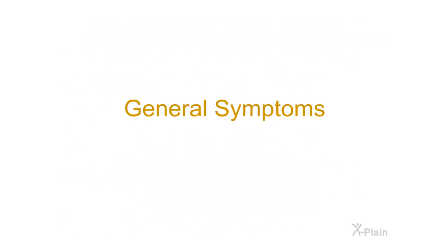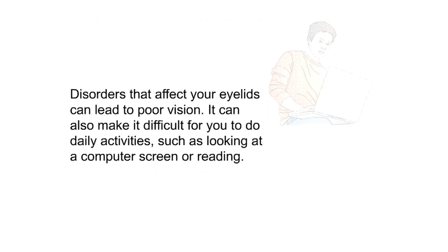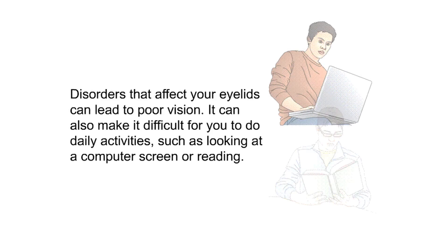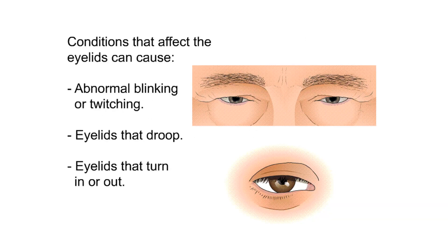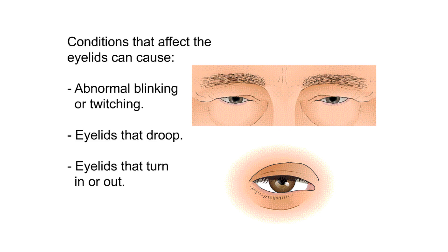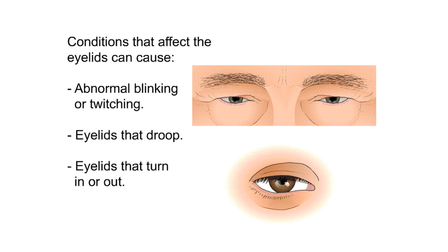General Symptoms. Disorders that affect your eyelids can lead to poor vision. They can also make it difficult for you to do daily activities such as looking at a computer screen or reading. Conditions that affect the eyelids can cause abnormal blinking or twitching, eyelids that droop, and eyelids that turn in or out.